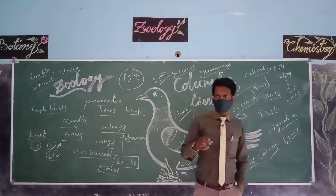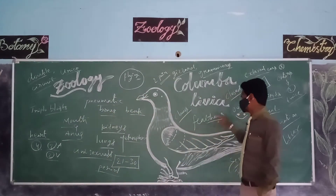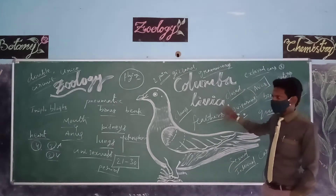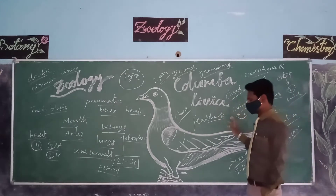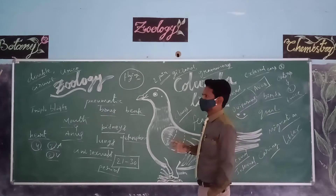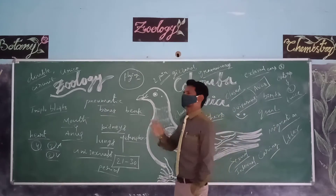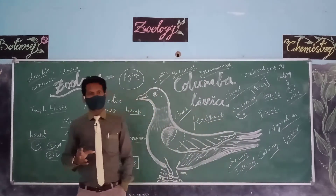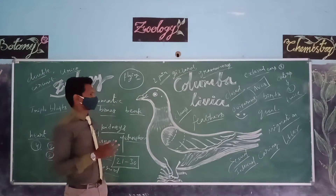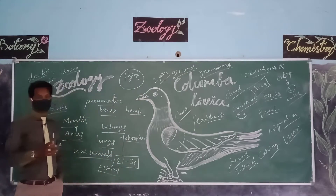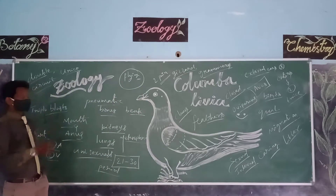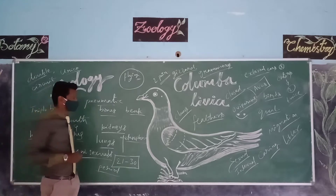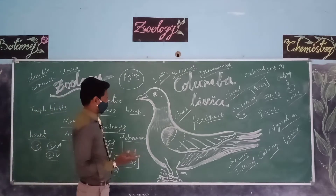Aves come under vertebrates, and especially chordates. Along with Aves in our chordates, different groups we could observe: Pisces, Reptiles, Amphibians, Mammals, and Aves. In today's class, we are going to discuss the general characters of Aves.